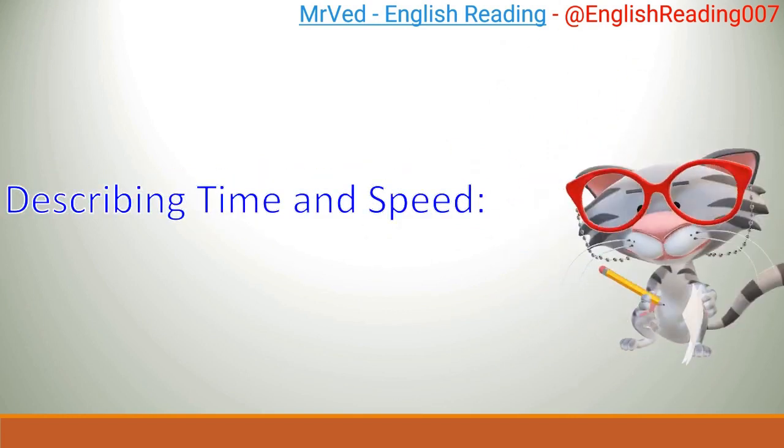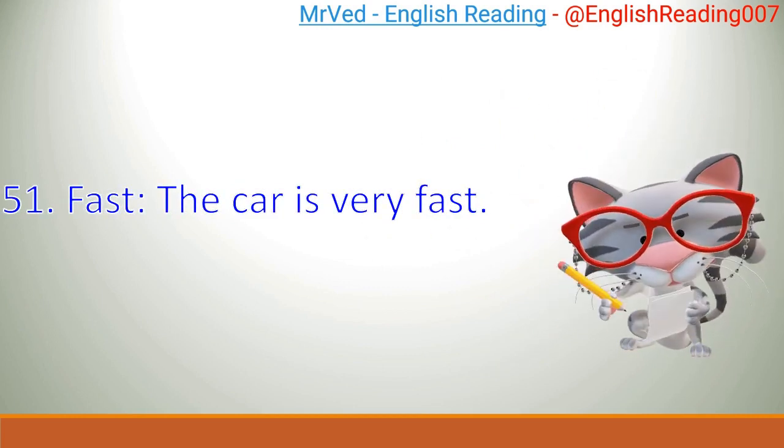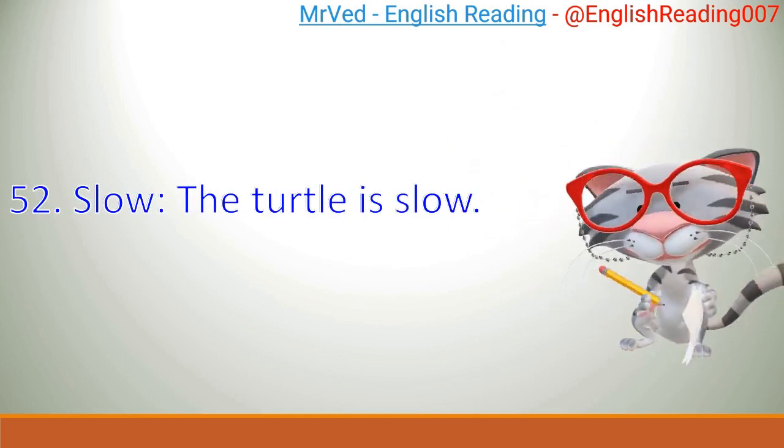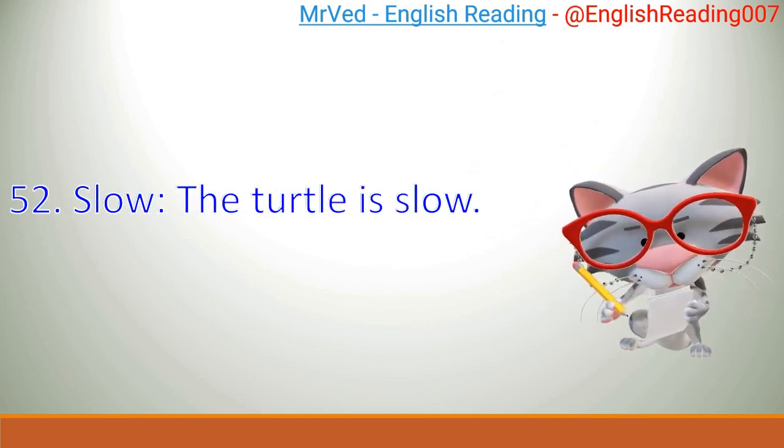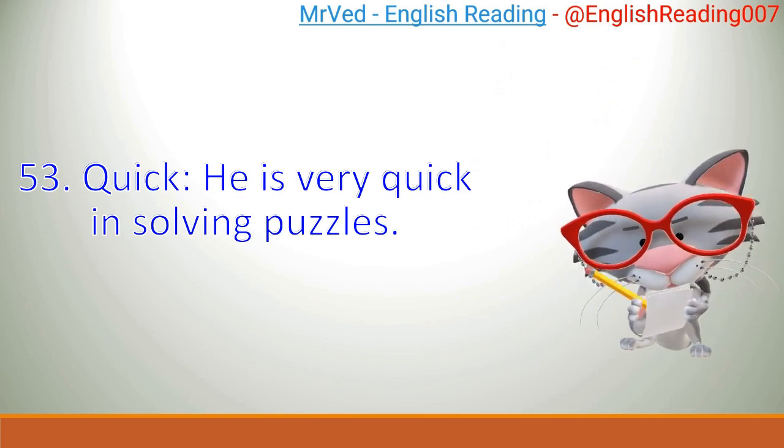Describing Time And Speed. 51. Fast. The car is very fast. 52. Slow. The turtle is slow. 53. Quick. He is very quick in solving puzzles.